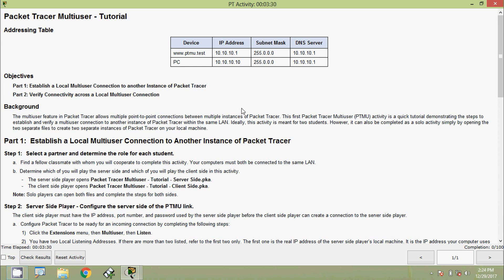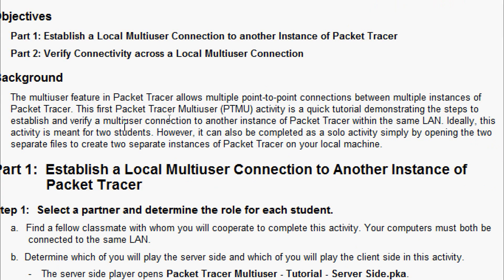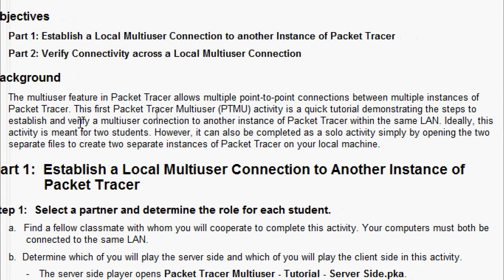Welcome. In this video we are going to see the Packet Tracer activity multi-user tutorial. Here is the addressing table showing devices, IP addresses, subnet masks, and DNS server addresses. We will go through the objectives: Part 1 - establish a local multi-user connection to another instance of Packet Tracer; Part 2 - verify connectivity across a local multi-user connection. The multi-user feature allows multiple point-to-point connections between multiple instances of Packet Tracer within the same LAN.